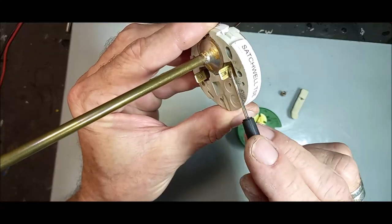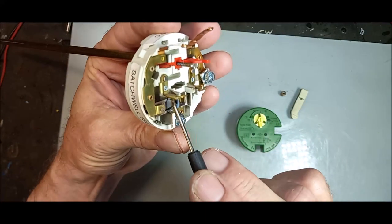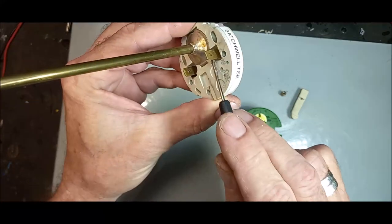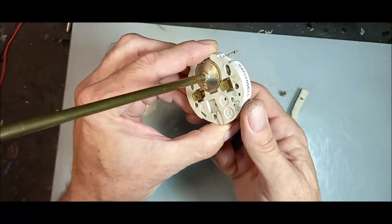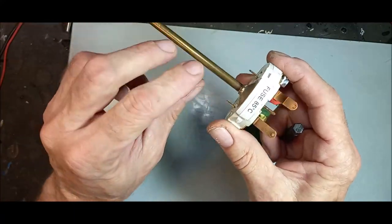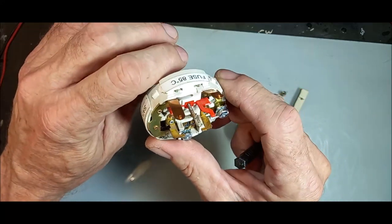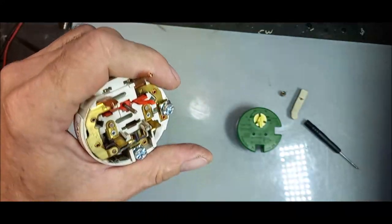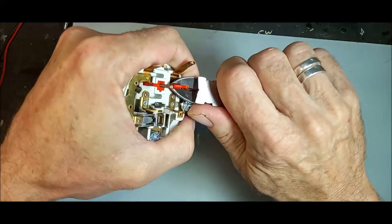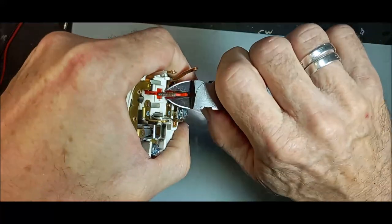Here's the contacts on the other side with the element. So after the contact, it goes to the elements, and then it fires up the element. I think it's about a two kilowatt element inside the geyser.